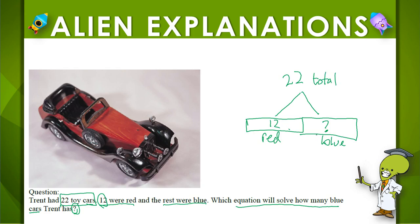So let's think about this. To get a total, that's when you combine parts together. So 12 plus something equals 22.